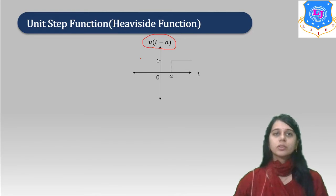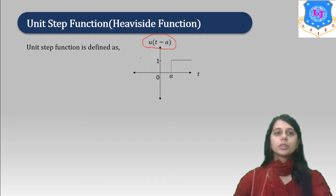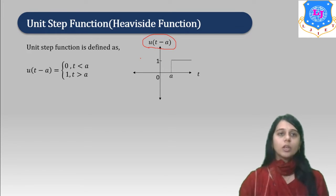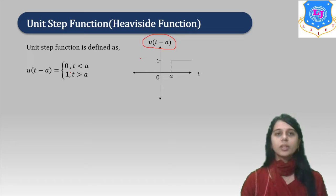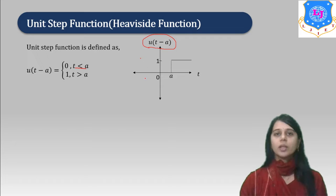The Unit Step function is also known as the Heaviside function. It is defined as u(t minus a) equal to 0 when t is less than a, and 1 when t is greater than a. That means in the region 0 to a, the function value is 0.